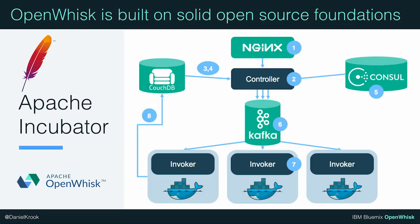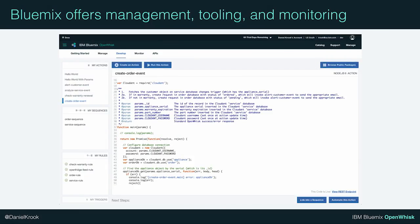Behind the OpenWhisk curtain, there are servers, of course. It's a distributed system built on top of proven cloud-native open-source software, including Nginx, Apache CouchDB, Consul, Kafka, and Docker. You can run the platform using Vagrant on a workstation, or deploy it on-premises on top of OpenStack, for example. You can get started building serverless applications with OpenWhisk at bluemix.net. We provide an online editor and a workflow builder for mapping triggers, actions, and rules.